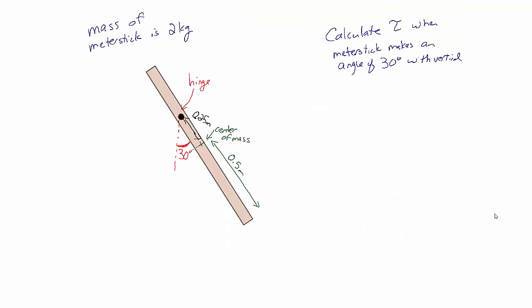Let's look at one more example. We have a meter stick with a mass of 2 kg. There's a hole in the meter stick a quarter of the way along — 0.25 meters from the end — placed on a nail in a wall. The meter stick is pulled up to an angle of 30 degrees with the vertical. We know that if we release it, it's going to rotate clockwise due to the gravitational torque, and we want to calculate that gravitational torque at this starting position.